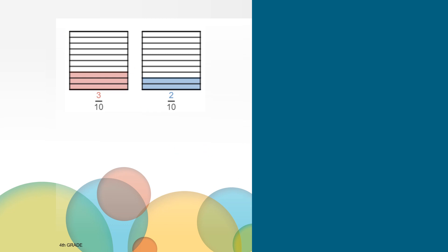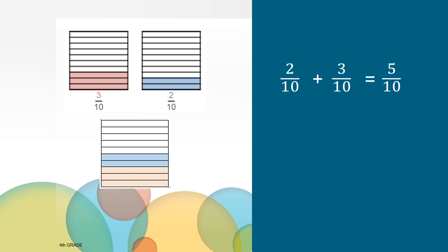These pictures show us that these rectangles have the same number of equal parts — tenths — but different amounts are shaded in each rectangle. These fractions have like denominators. How much of the shape will be shaded when we add the shaded parts together? Maybe you thought about moving the two parts into one rectangle and showed that two-tenths plus three-tenths equals five-tenths. Five-tenths is equivalent to one-half, so we could also say that two-tenths plus three-tenths equals one-half.